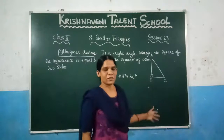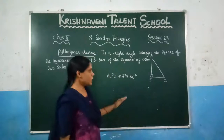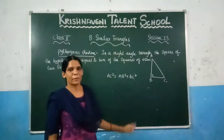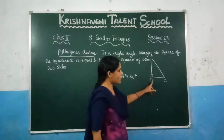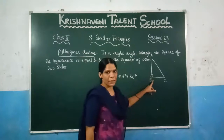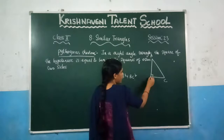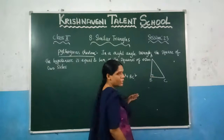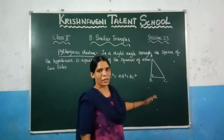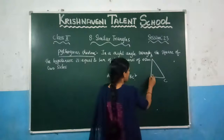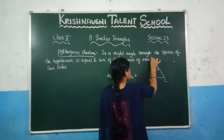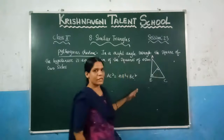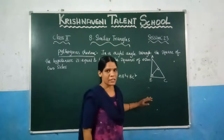For this proof, we need one construction. We need to draw a perpendicular line from the right angle vertex to the hypotenuse. In this triangle, there is a right angle at B. So at this vertex, we draw a perpendicular line to the hypotenuse. We have now drawn the perpendicular line. This is our construction.